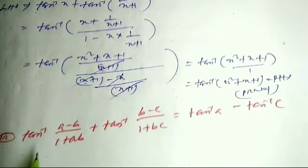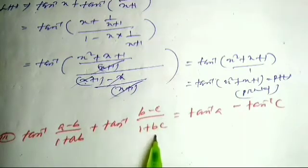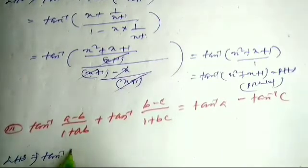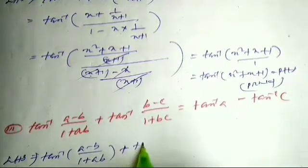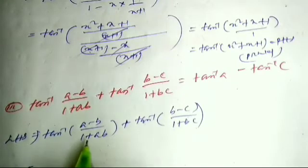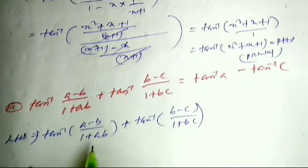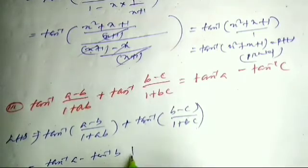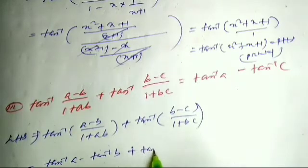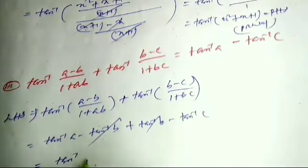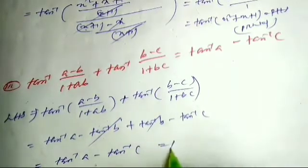Next question: tan⁻¹((a-b)/(1+ab)) + tan⁻¹((b-c)/(1+bc)) = tan⁻¹(a) - tan⁻¹(c). LHS is tan⁻¹((a-b)/(1+ab)) + tan⁻¹((b-c)/(1+bc)). The formula is: tan⁻¹(a) - tan⁻¹(b) = tan⁻¹((a-b)/(1+ab)). So LHS becomes (tan⁻¹(a) - tan⁻¹(b)) + (tan⁻¹(b) - tan⁻¹(c)). The tan⁻¹(b) terms cancel, giving tan⁻¹(a) - tan⁻¹(c), which is RHS. Proved.